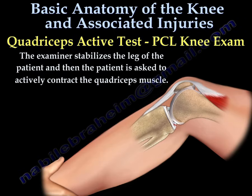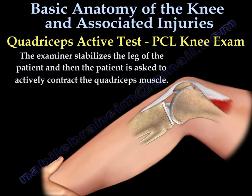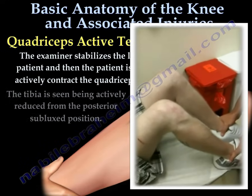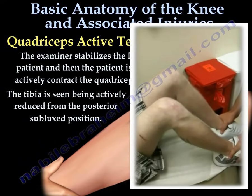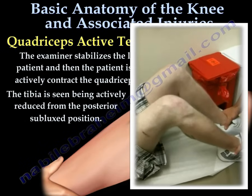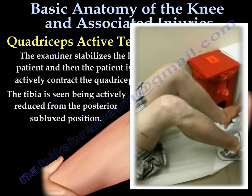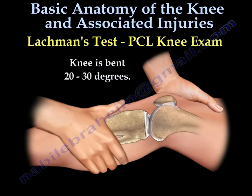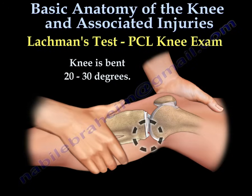The quadriceps active test is performed with the patient's knee flexed to 90 degrees. The examiner stabilizes the leg and has the patient actively contract the quadriceps muscle. The tibia is seen being actively reduced from the posterior subluxed position. The Lachman's test is also used to identify injuries of the posterior cruciate ligament; the examiner will provide posterior force to the tibia while applying anterior pressure to the femur in order to assess the posterior translation of the tibia.